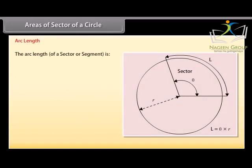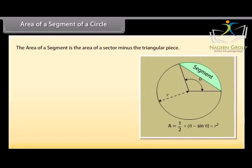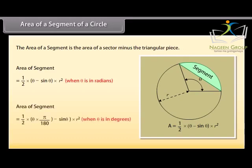Arc length: By the same reasoning, the arc length L of a sector equals theta × r when theta is in radians, or L equals theta × (pi/180) × r when theta is in degrees. Area of a segment of a circle: The area of a segment equals the area of the corresponding sector minus the triangular piece. Area of segment equals (1/2)(theta − sin theta) × r squared when theta is in radians, or (1/2)(theta × pi/180 − sin theta) × r squared when theta is in degrees.